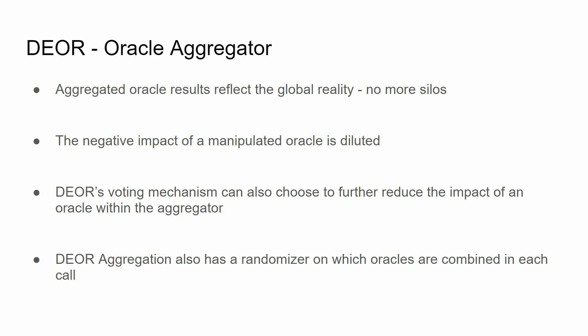Even if multiple oracles were to be affected due to some black swan event, Dior's voting mechanism can also dynamically adjust the weights and reputation of oracles within the aggregator, giving a rapid way of determining which oracles are behaving properly and which aren't. Furthermore, Dior has an extra layer of protection through a randomizer function that randomly assigns oracles to an aggregation, so not every aggregation instance has the exact same oracles and not all oracles are in every aggregation — another layer of security in addition to aggregation and dynamic voting.